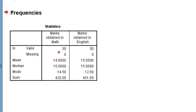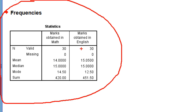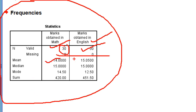An output window will open showing this kind of output. The total sample for both English and Maths is 30 students, with missing equal to zero, meaning we have scores for all 30 students. For mathematics, the mean is 14.0 on a 20-mark test, the median is 15, the mode is 14.50, and the sum of scores is 420.